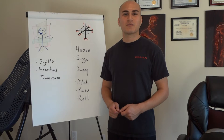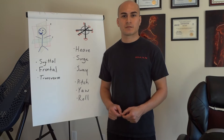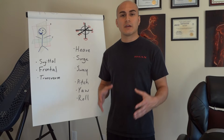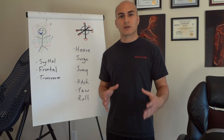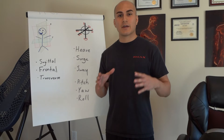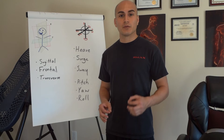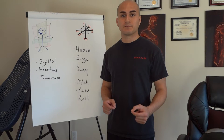Welcome back. Today we're talking about the Six Degrees of Freedom. The Six Degrees of Freedom is a model used in the Circular Strength Training System to help classify movements. It's derived from the work of neurophysiologist Nikolai Bernstein.